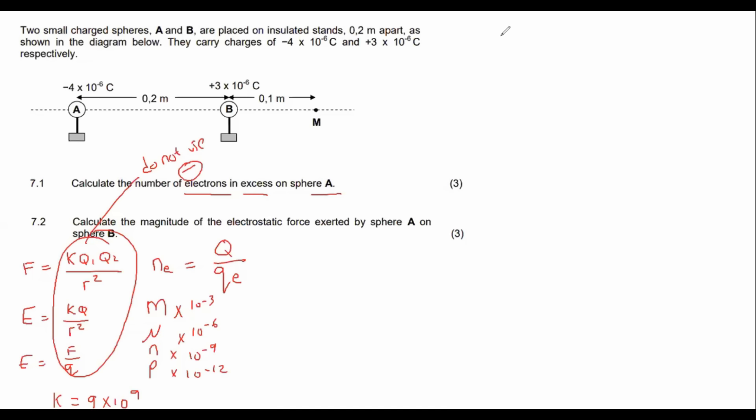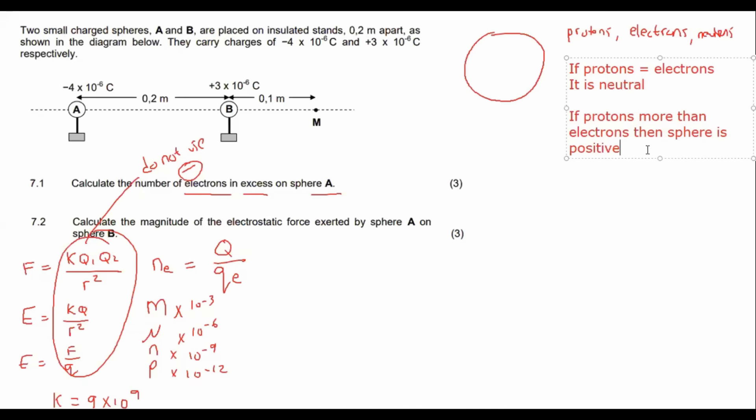We know that we have, if you have a sphere, that sphere is combined with three main things, protons, electrons, and neutrons. Now I know this is basic to some of you, but I know that for others, it can be quite helpful. So if your protons equals your electrons, if there's the same amount, then it is neutral. If protons are more than electrons, then the sphere is positive. And if protons less than electrons, then sphere is negative. Simple as that.